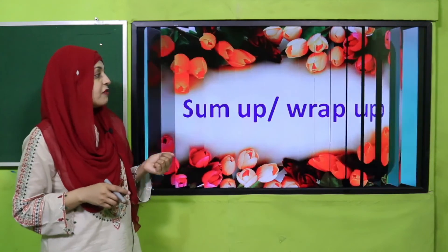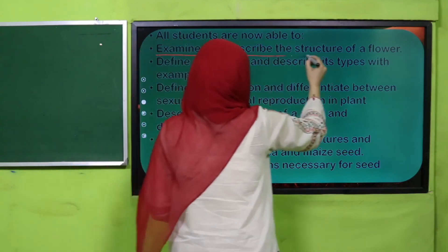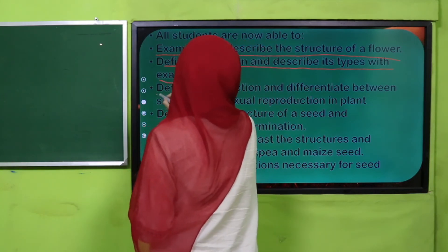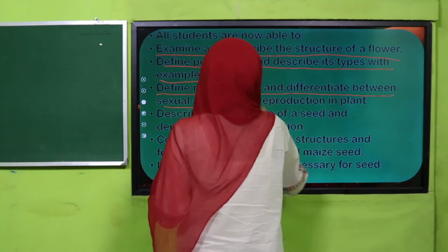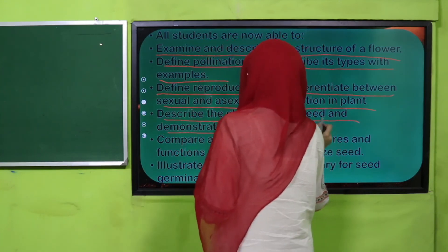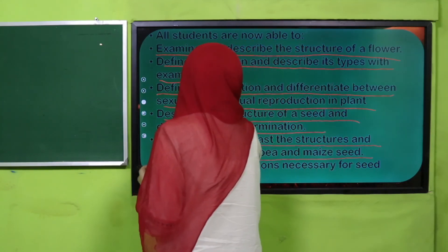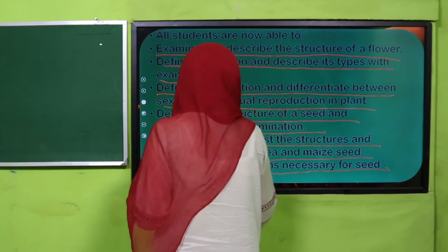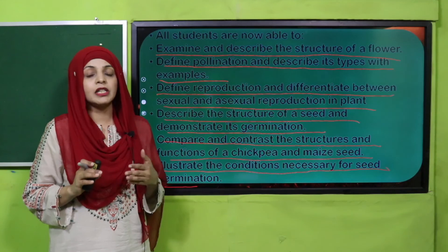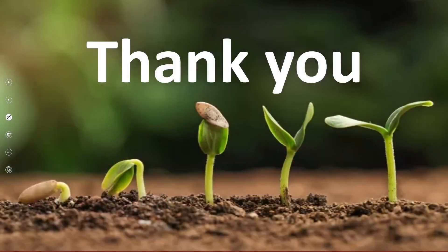Let's have a look at what we have learnt in this chapter. All students are now able to: examine and describe the structure of a flower; define pollination and describe its types with examples; define reproduction and differentiate between sexual and asexual reproduction in plants; describe the structure of a seed and demonstrate its germination; compare and contrast the structures and functions of a chickpea and maize seed; and illustrate the conditions necessary for seed germination. Aapne tamam points cover kar liye hain. If you find any difficulty, you can re-watch the related lecture. Keep everybody around you safe, have a good day, thank you so much, and Allah Hafiz.